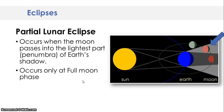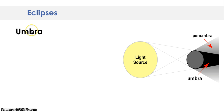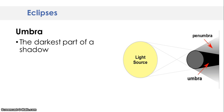A partial lunar eclipse only occurs at a full moon phase and at night. Now we're going to talk about the two terms: umbra and penumbra. In your notes, write the heading umbra. Under umbra, write that it's the darkest part of a shadow.